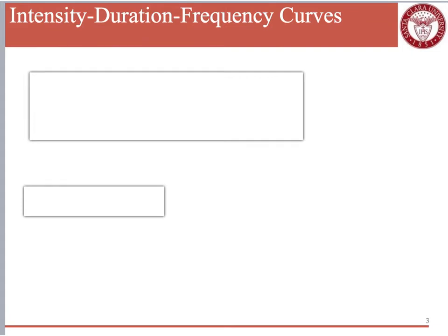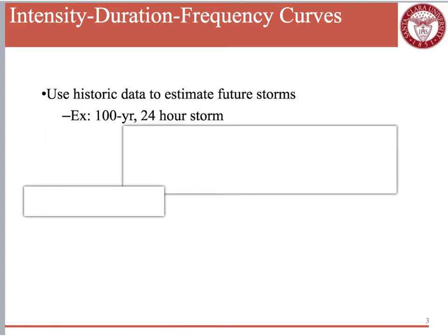We talked about intensity and duration — the total time from the first raindrop to the last raindrop in any storm. Now we're going to add in frequency. Frequency is a probability — a way to explain how often to expect any particular storm. You might hear, for example, that we just had a 100-year, one-day or 24-hour storm. So what does that mean?